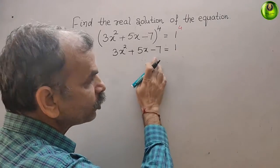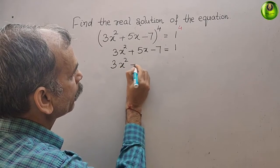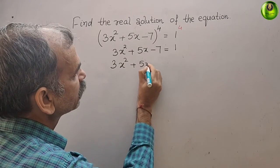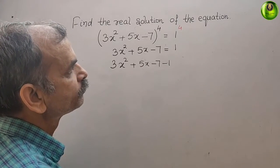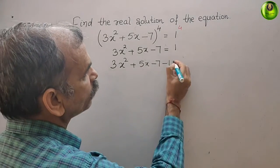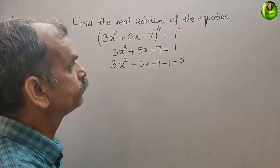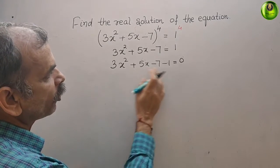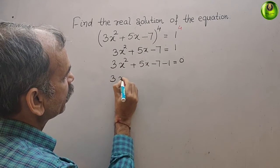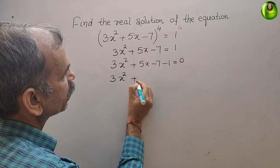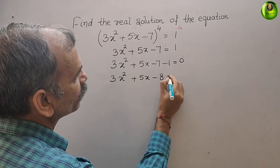Bring this 1 to your left side. It will be 3x² + 5x - 7 - 1, that is equal to 0. We can say it as 3x² + 5x - 8 = 0.